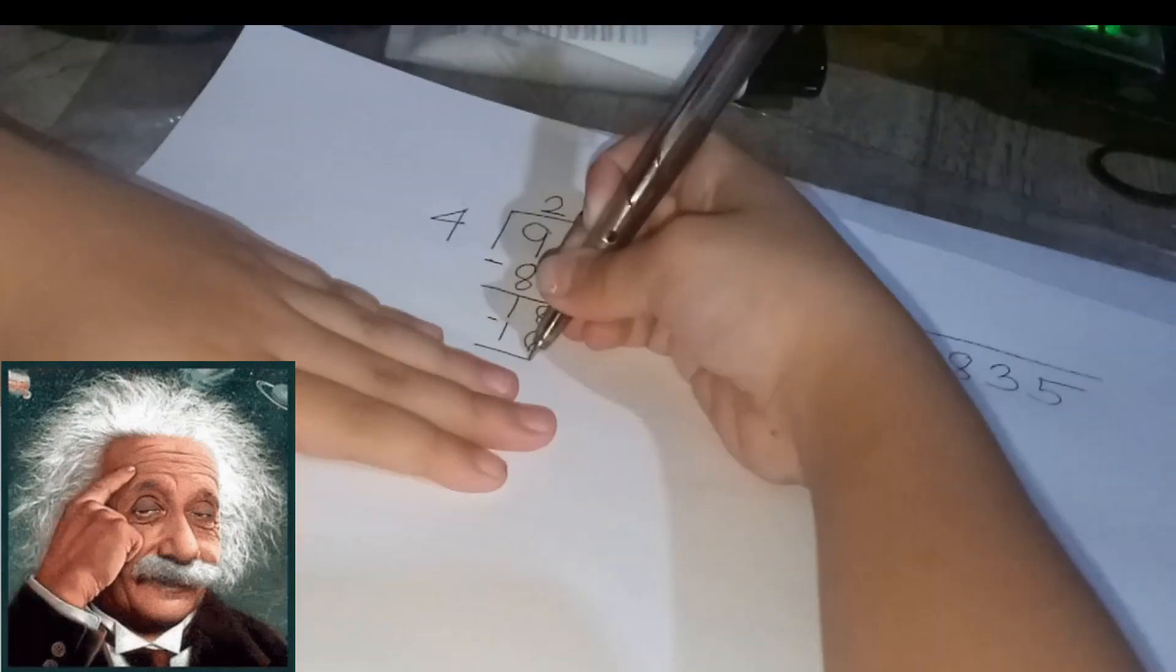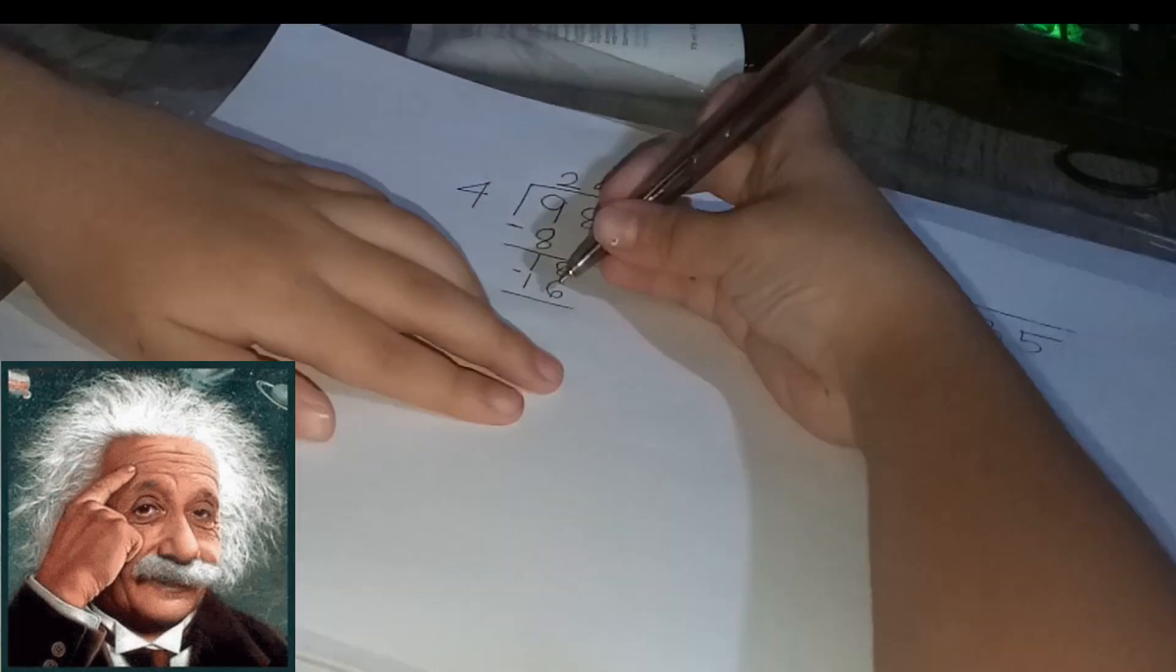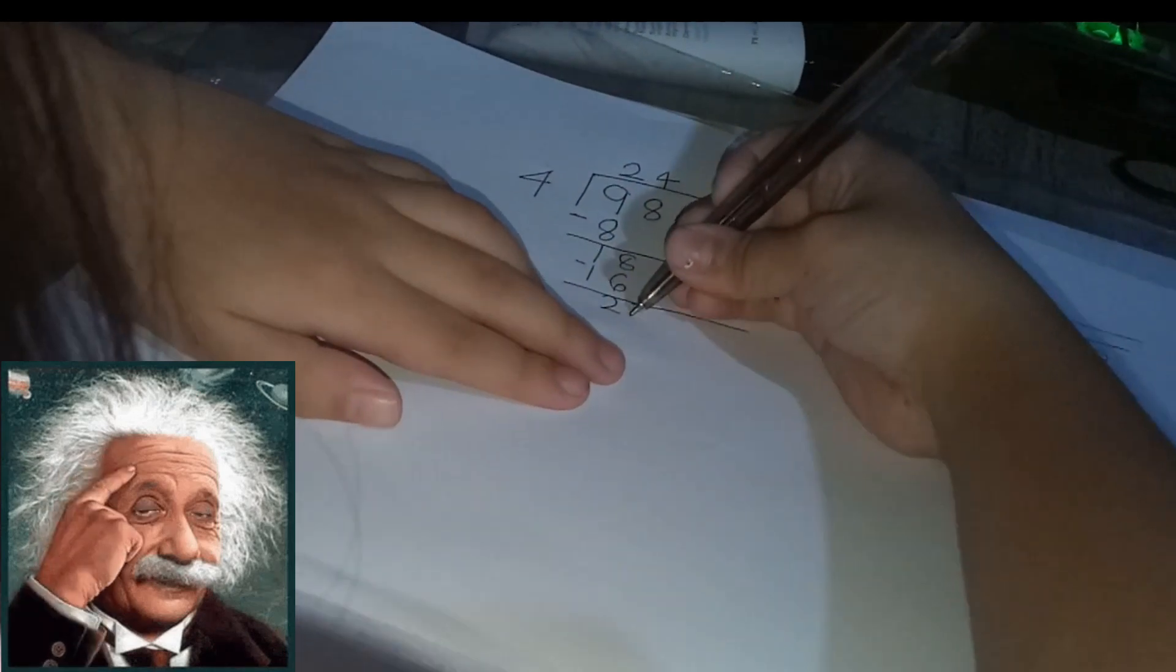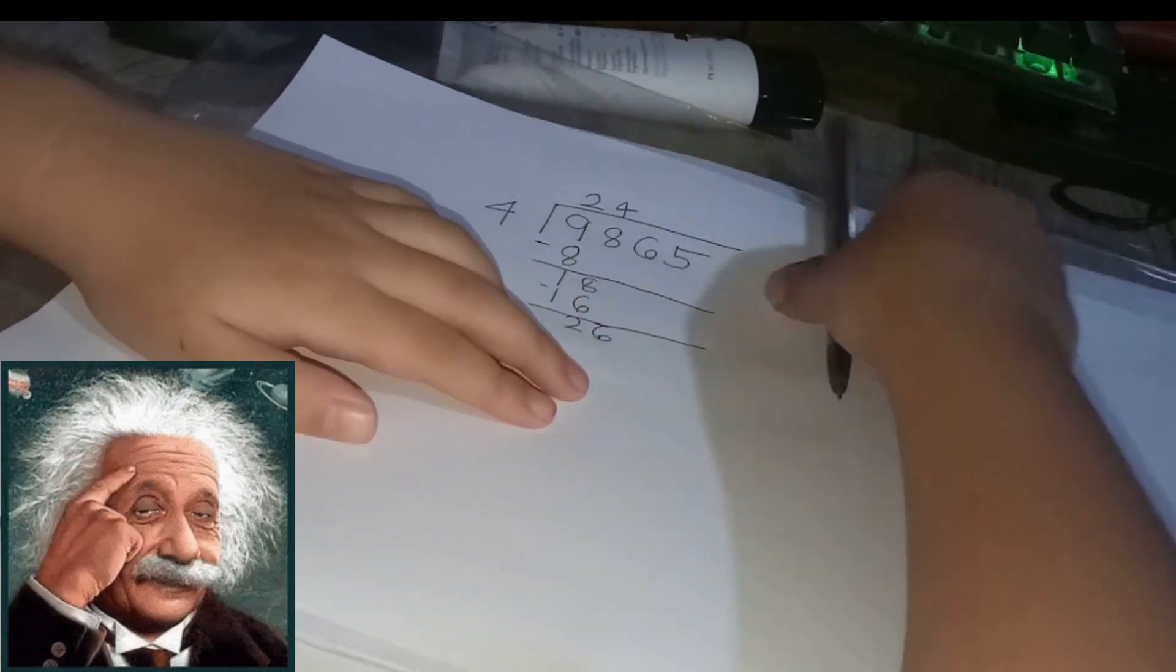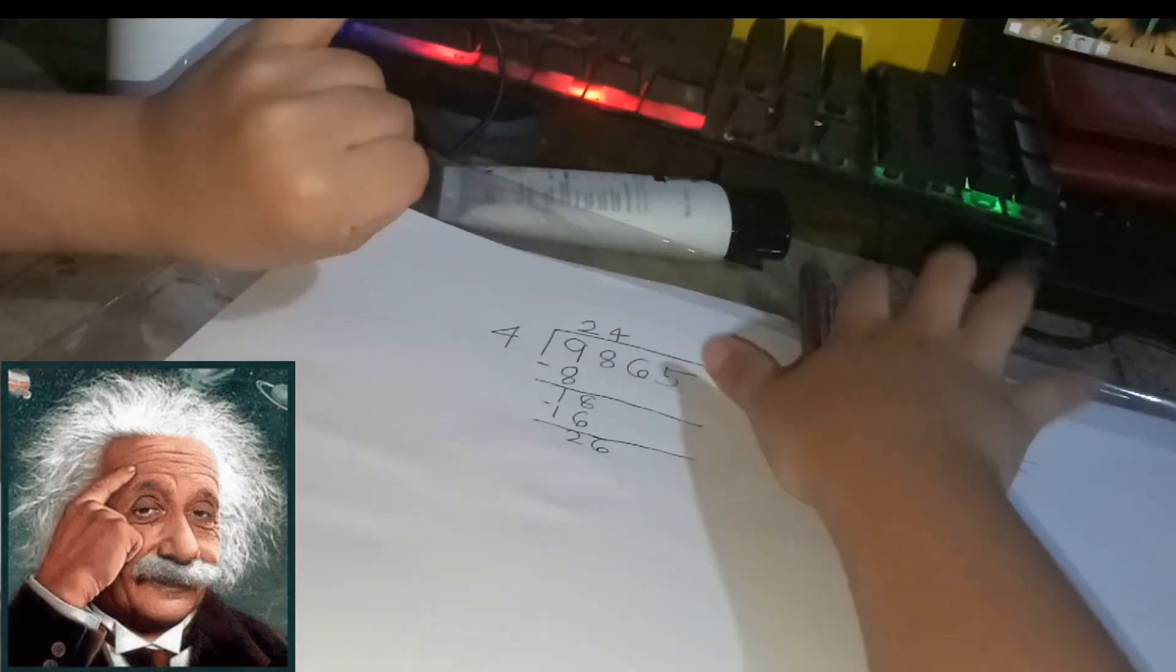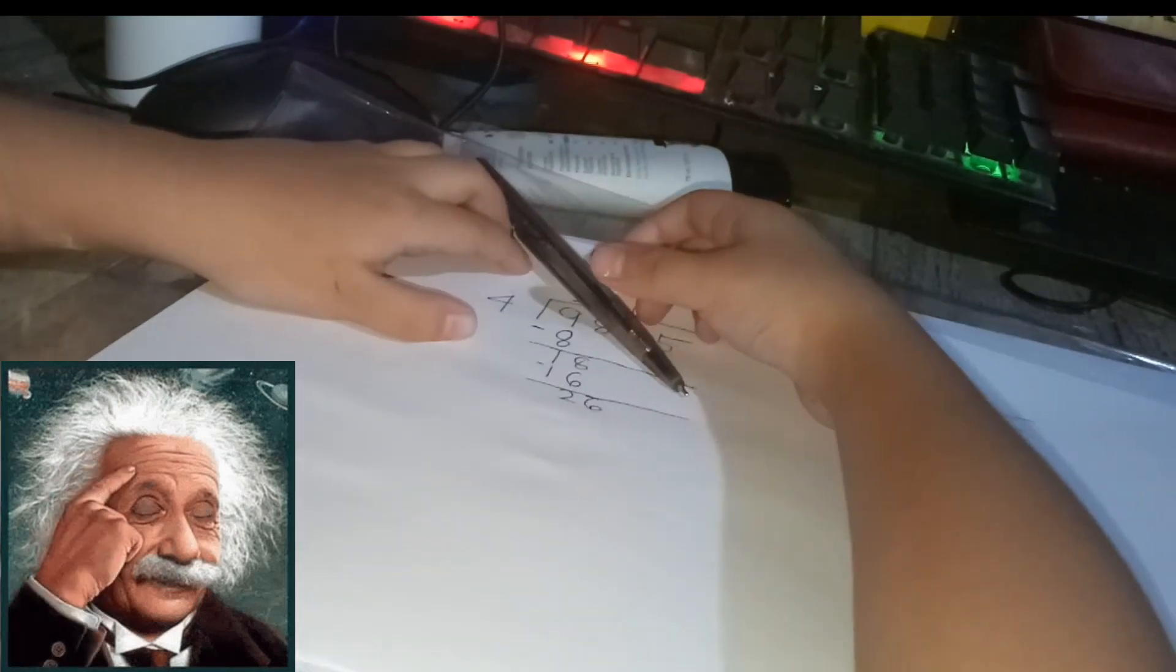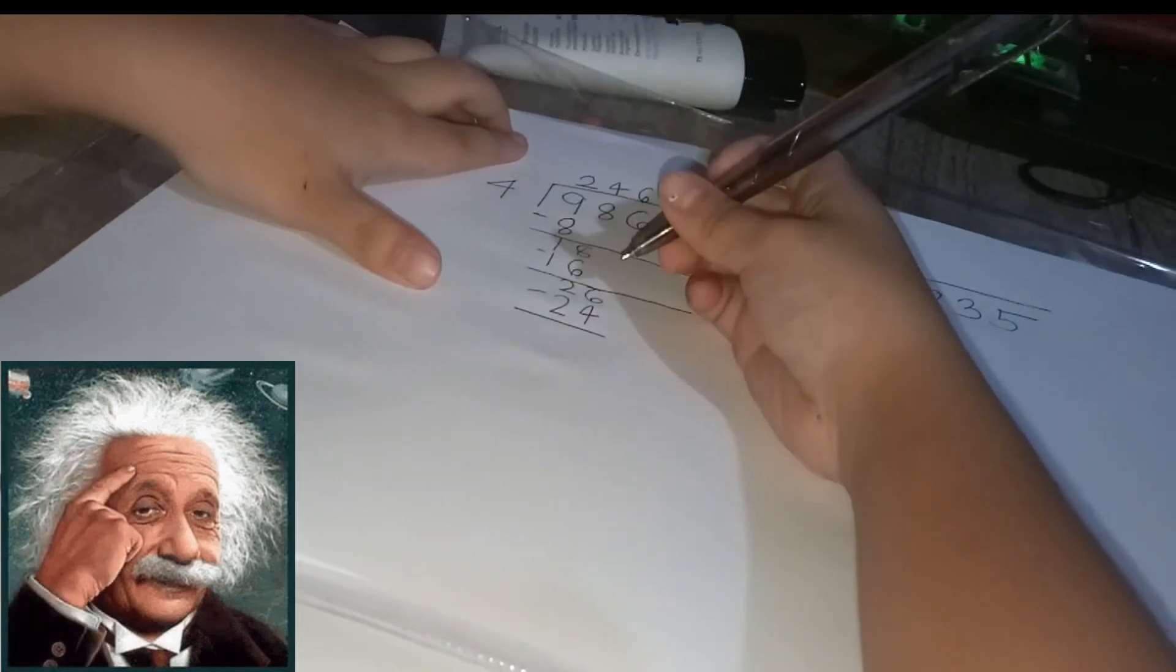Eight minus six, two. So you drop the six down. 26 divide by four: four, eight, twelve, sixteen, twenty, twenty-four, twenty-eight. Passed.